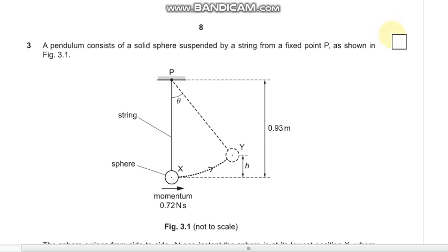Hello, let's start with Summer 21 QP21. We have already done questions 1 and 2, so we'll begin with question 3, which says a pendulum consists of a solid sphere as shown. This height is 0.93, the momentum is 0.72 Newtons, and the kinetic energy given is 0.86 joules.